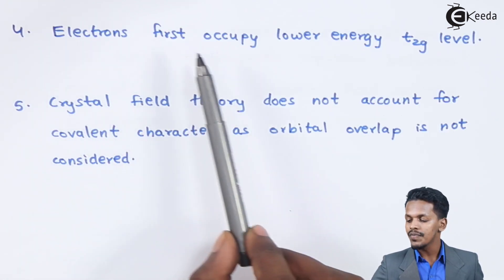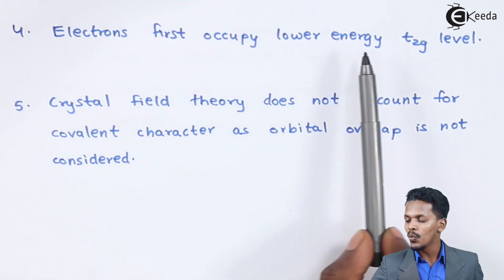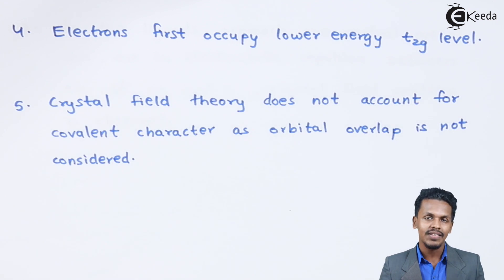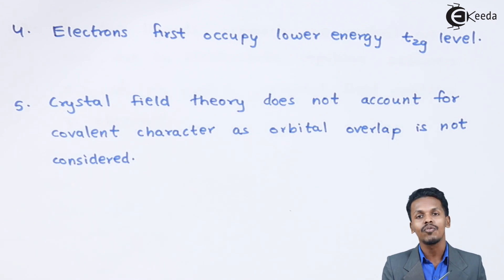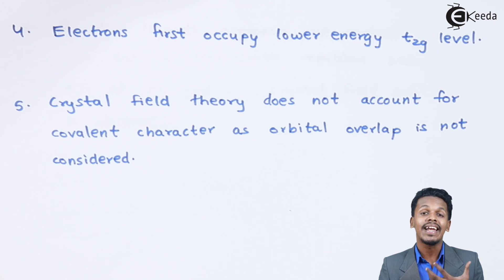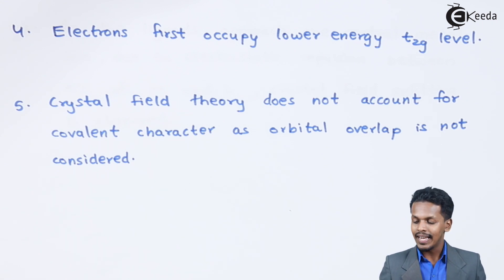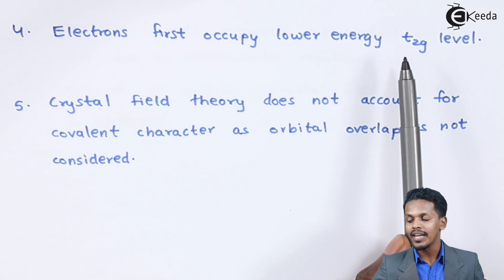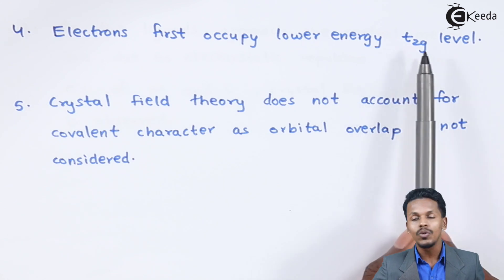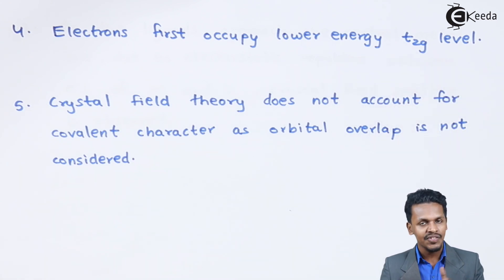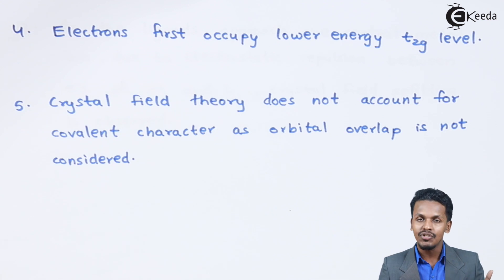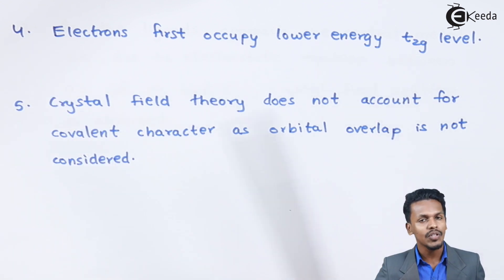The fourth point is that electrons first occupy the lower energy T2G level. When electrons are being filled and paired due to the ligands, they first fill the lower T2G level, and once that is filled, they then move up to fill the EG level.